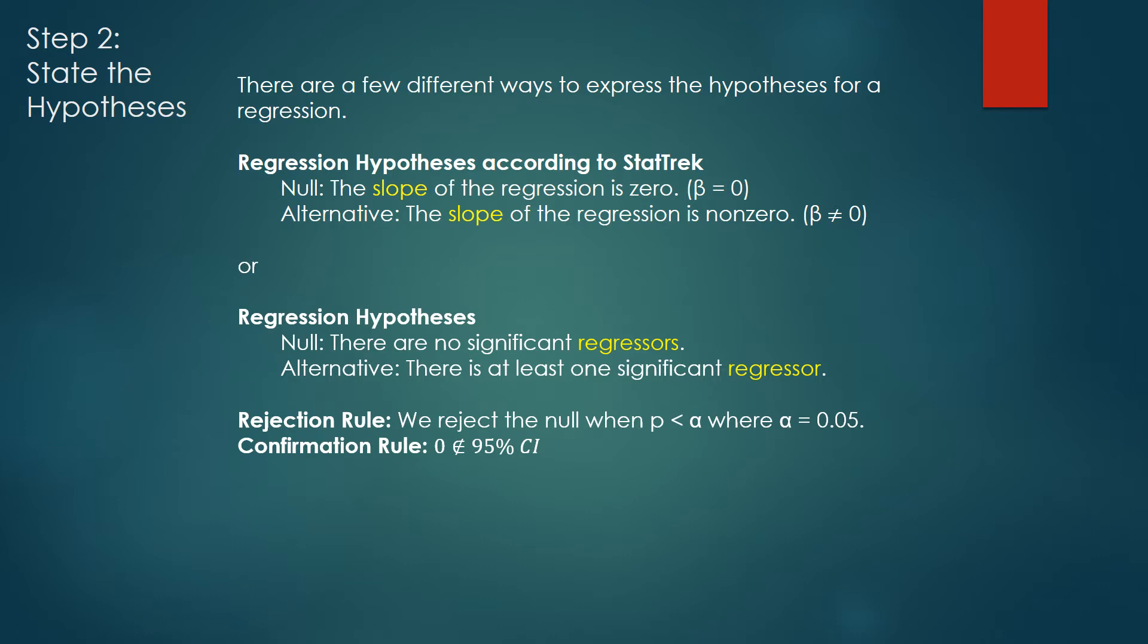We also need to state the rejection rule. We reject the null hypothesis when P is less than alpha, where alpha is set to 0.05. Also, we want to use the confirmation rule that 0 is not within the 95% confidence interval.